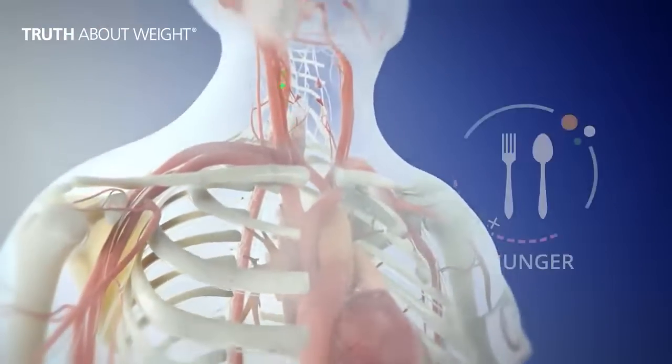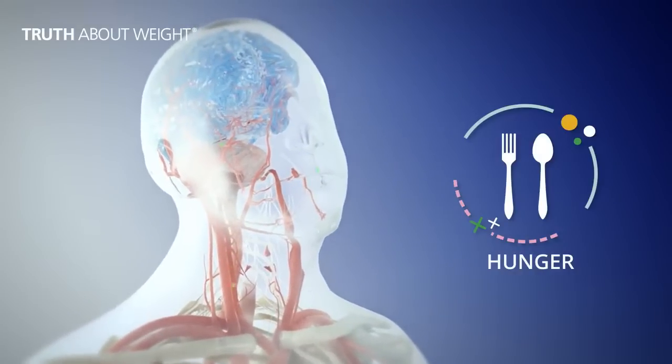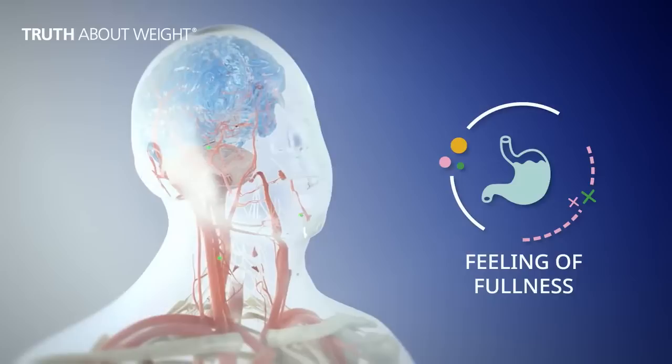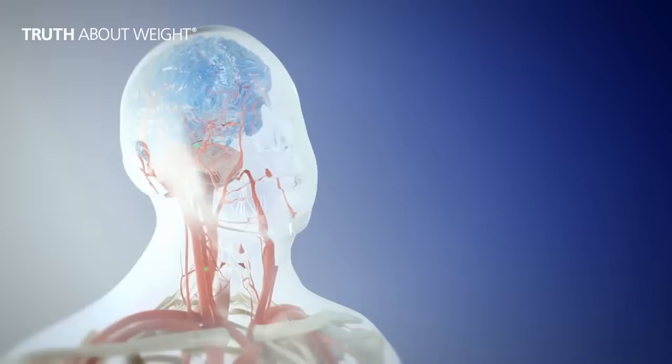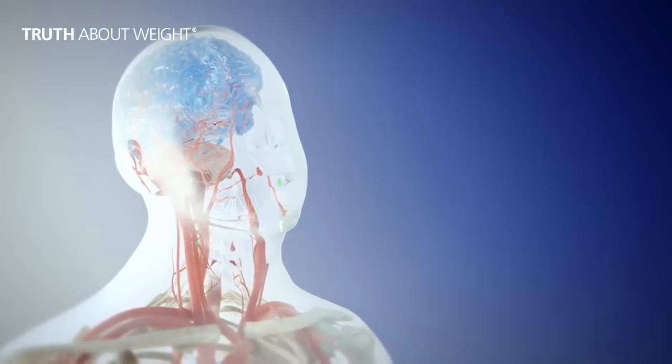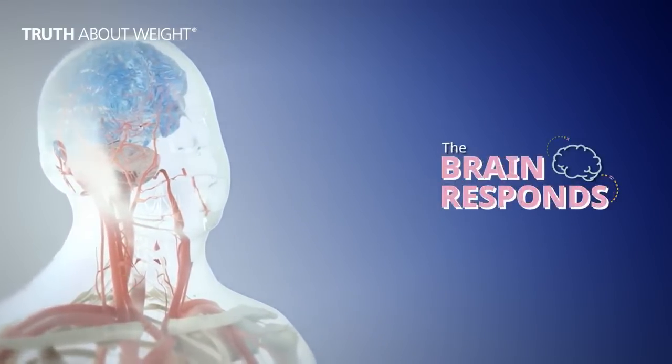These hormones signal the brain to help manage your appetite, including hunger and the feeling of fullness. Both the brain and these appetite hormones contribute to what, why, and how much you eat, including for hunger and for pleasure. Reacting to these impulses, the brain decides what action to take.